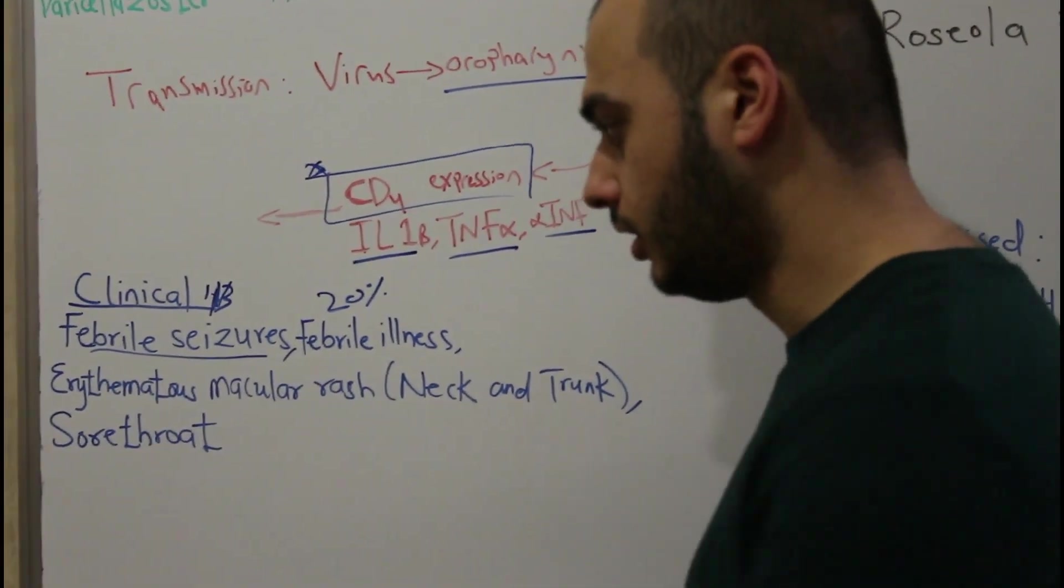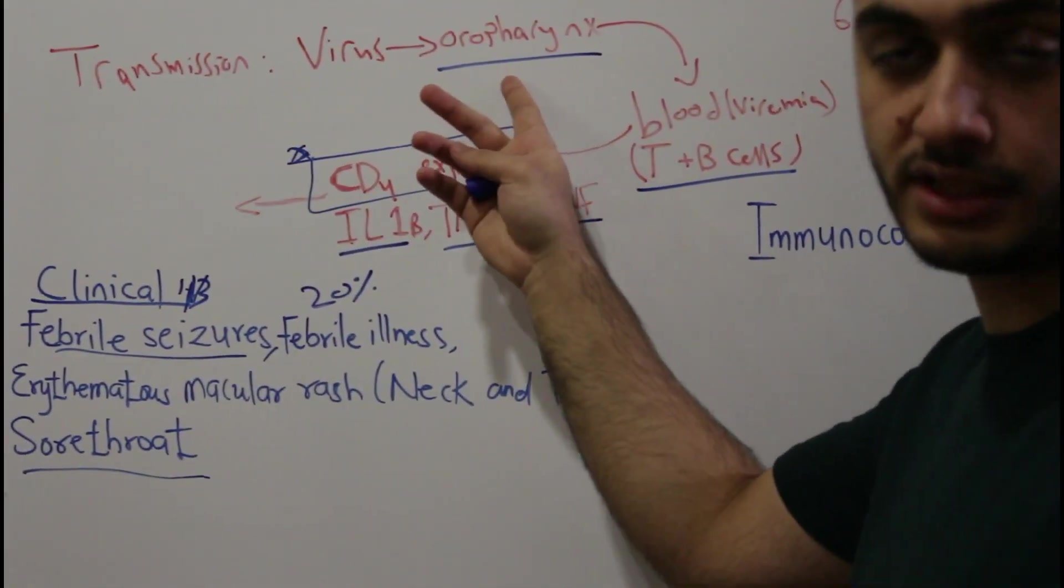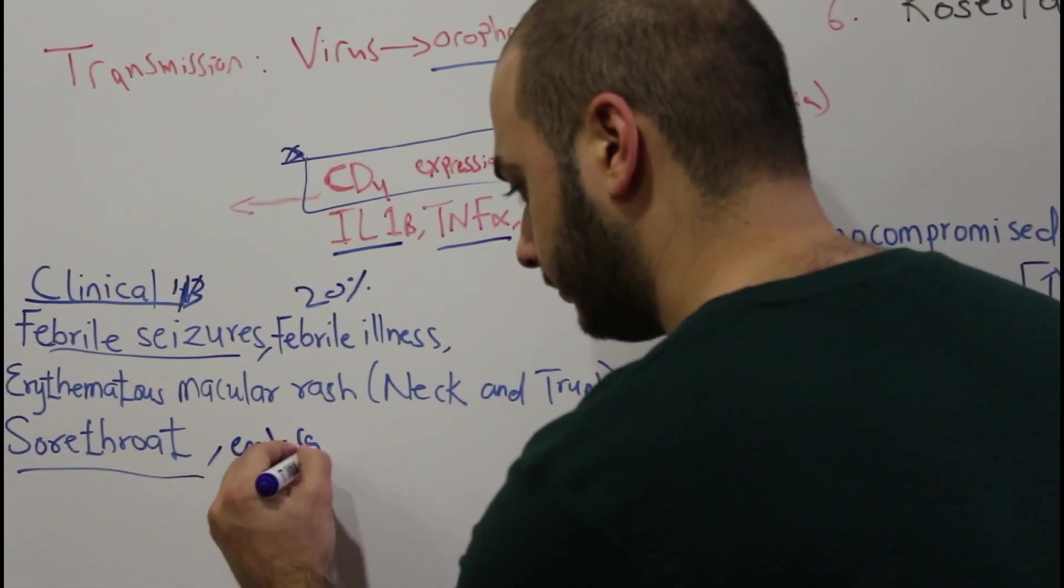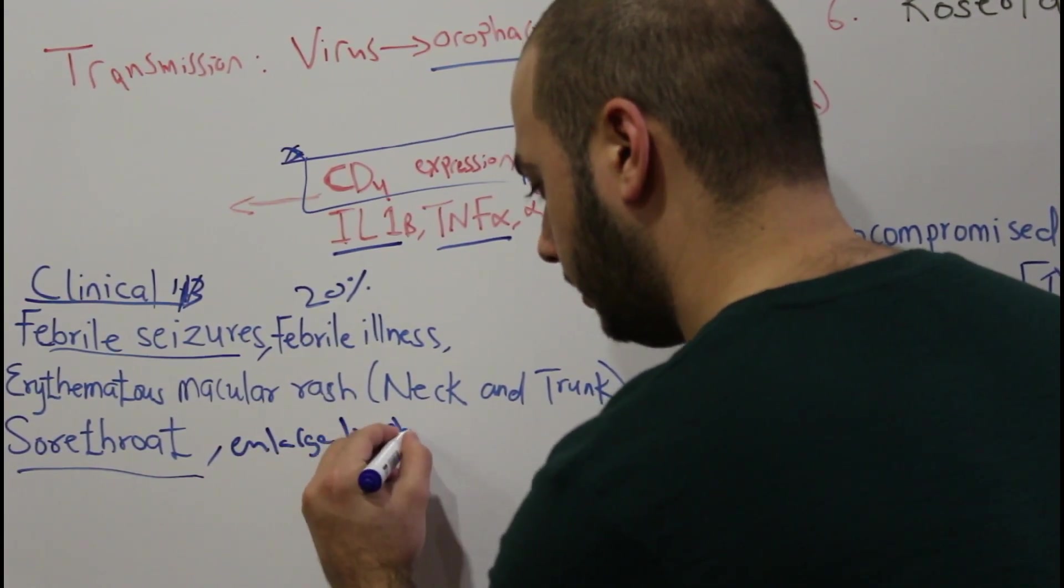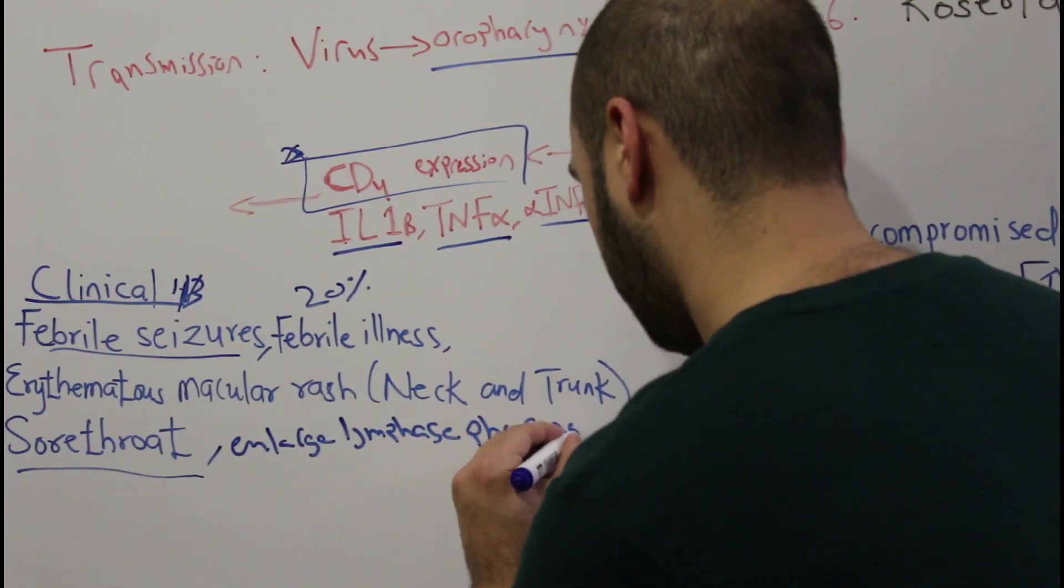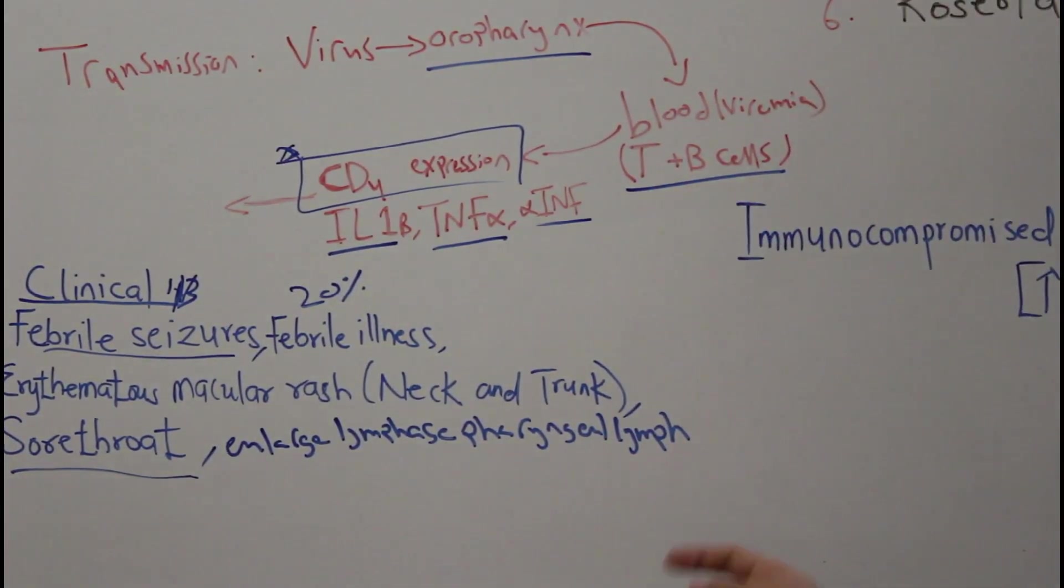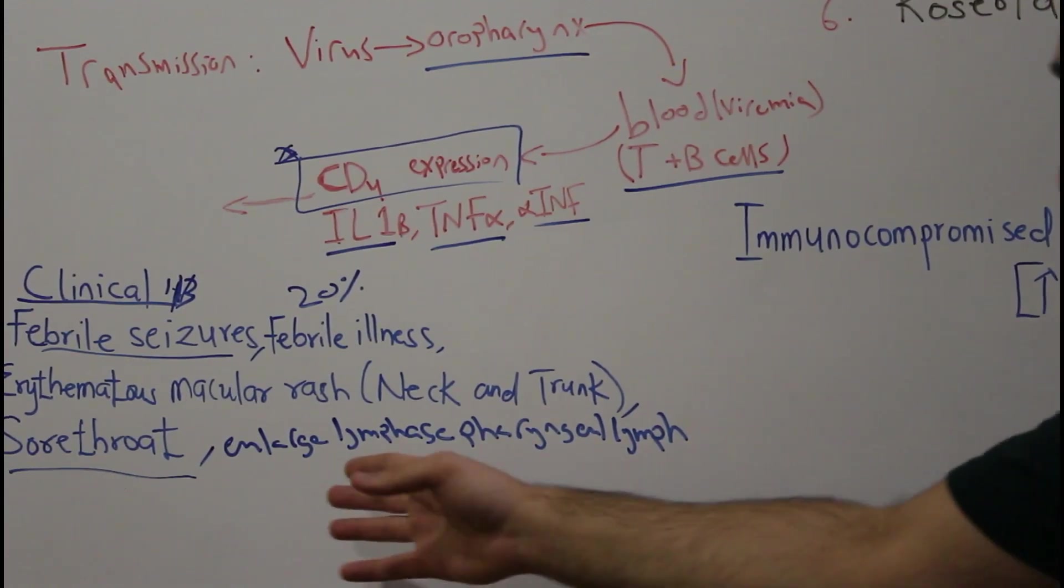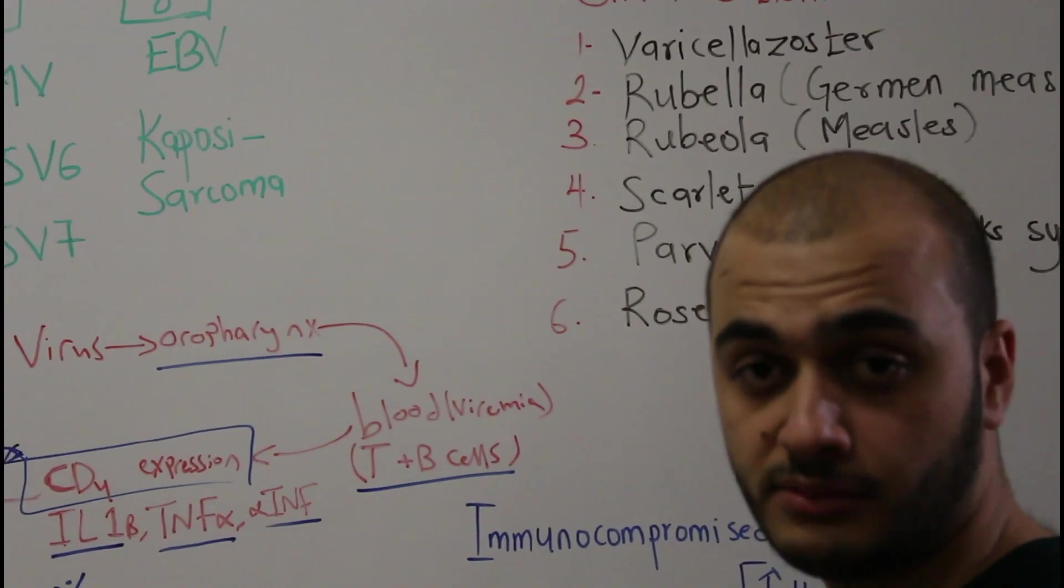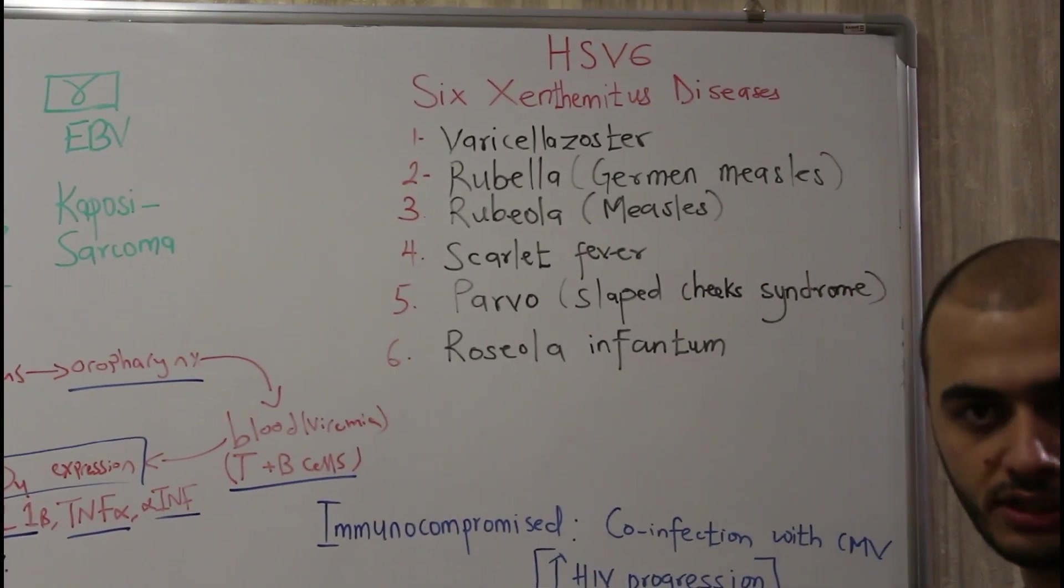There will also be sore throat because of viral replication in the oropharynx, and enlarged lymphatic nodes. Since this disease is characterized by rash and fever, it's called exanthem subitum disease. According to the common order, they classified it as the sixth disease.